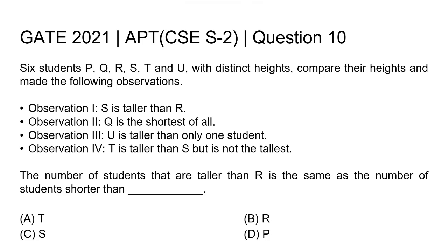Observation 1 is S is taller than R. Observation 2 is Q is the shortest of all. Observation 3 is U is taller than only one student. Observation 4 is T is taller than S but is not the tallest.